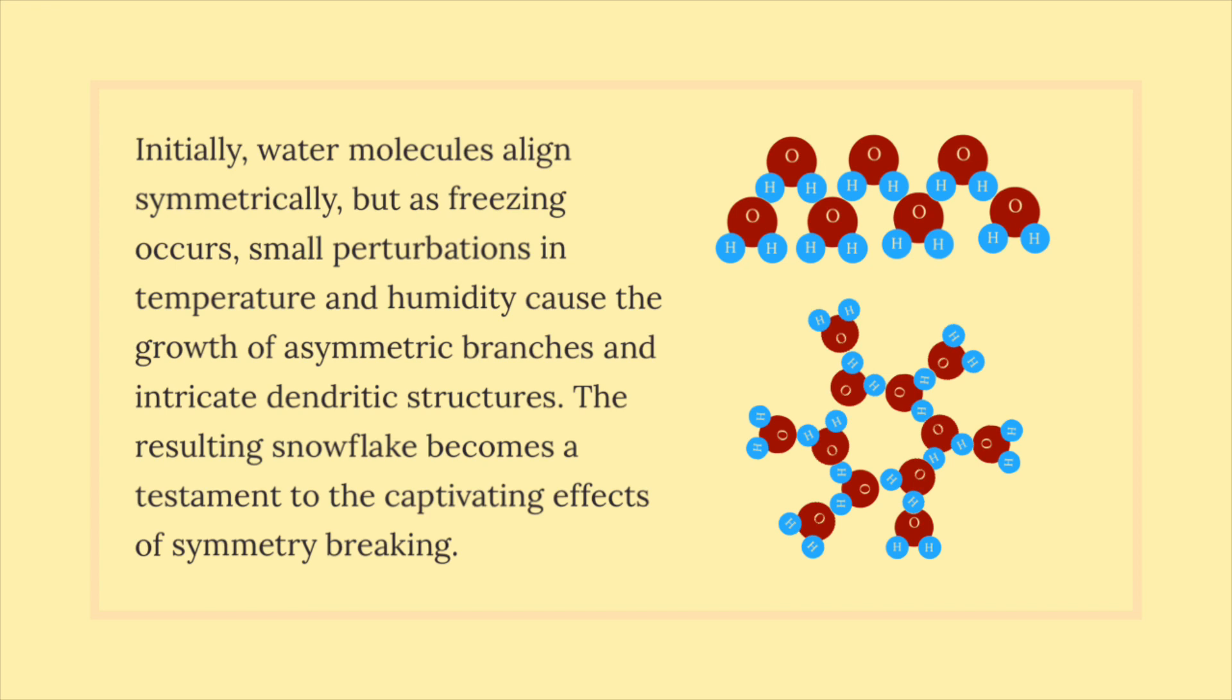small perturbations in temperature and humidity cause the growth of asymmetric branches and intricate dendritic structures. The resulting snowflake becomes a testament to the captivating effects of symmetry breaking.